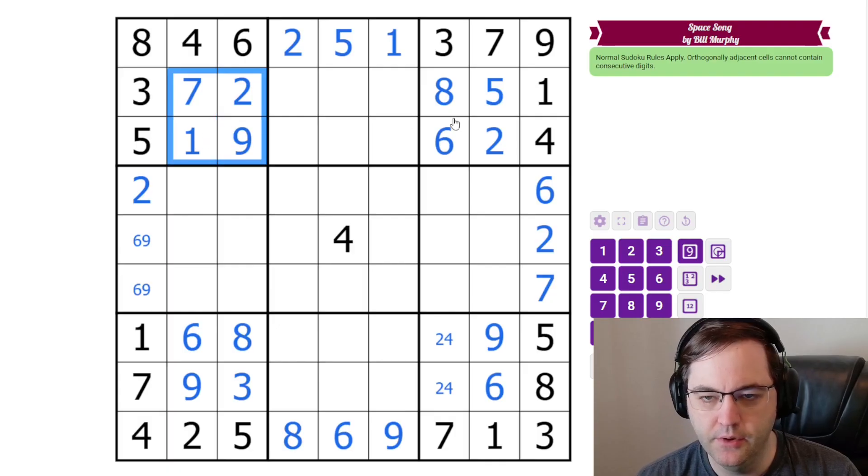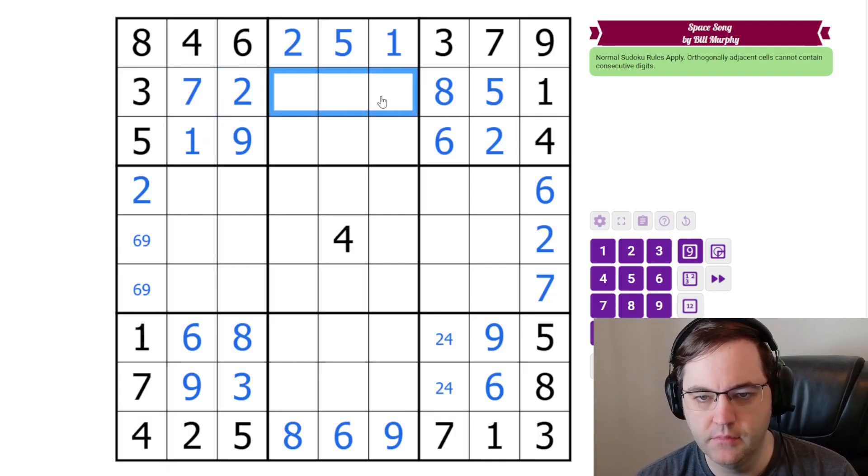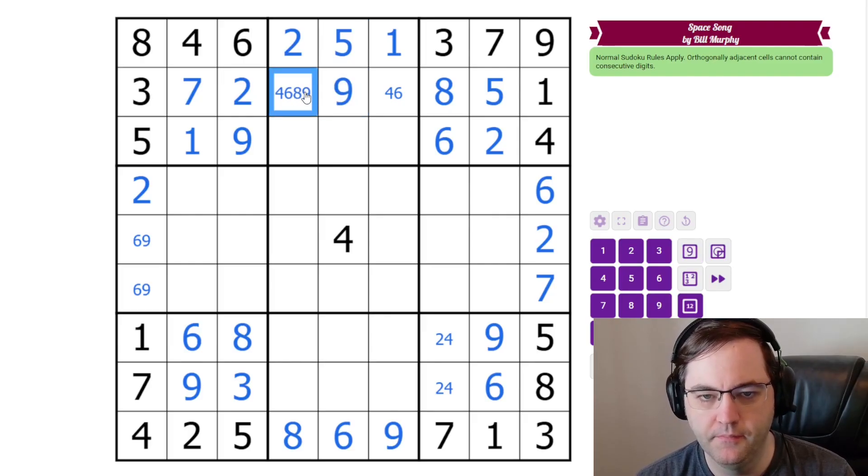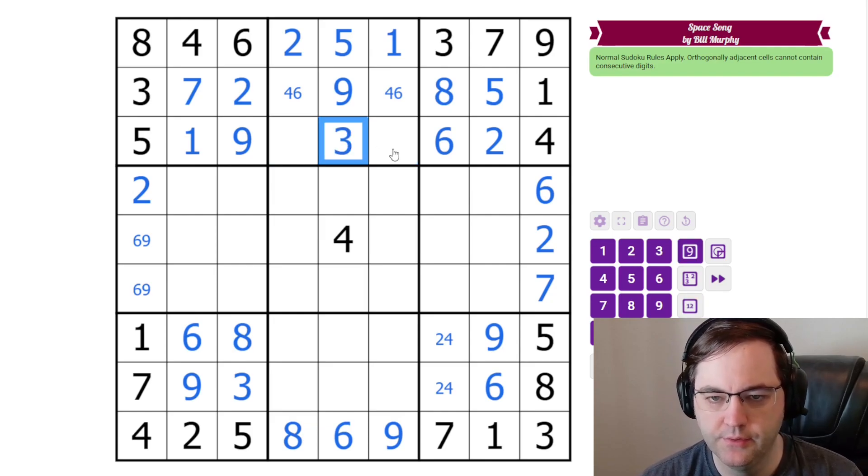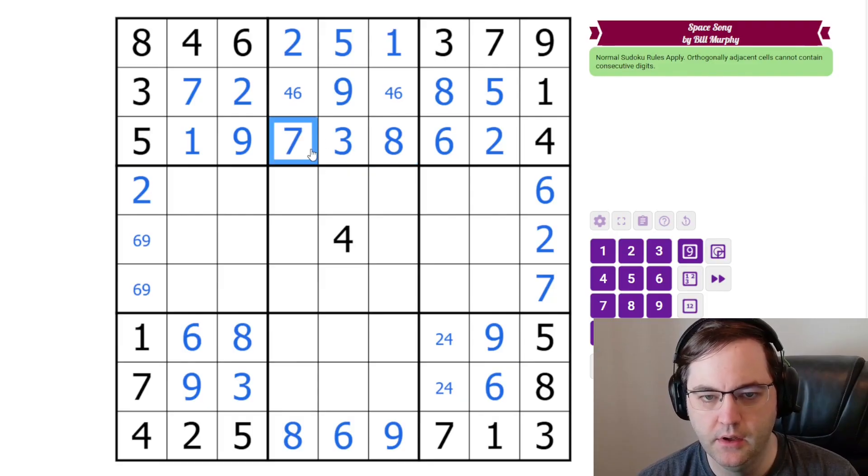Now that we have those digits in the corner boxes, now we have more rows that are only missing 3 digits. So, we can look at those now. This can't be 9. This can't be 4 or 6 because of 5. So, this is 9. These are 3, 7, 8. 7 and 8 can't go next to each other. So, that must be the 3. And then 8, 7, like that.